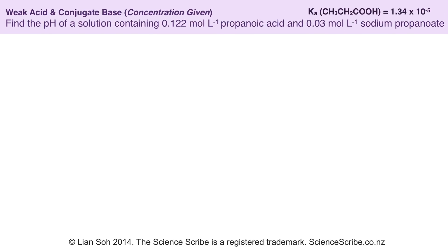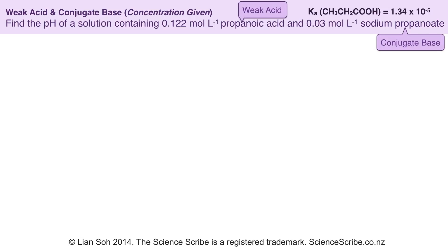Solution number 1 contains a weak acid and a conjugate base mixed together, and the question already tells you what the concentrations are. My propanoic acid is 0.122 moles per liter — that's my weak acid — and my propanoate ions, my conjugate base, is 0.03 moles per liter.